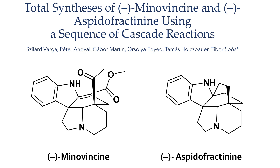Both of these compounds belong to the Aspidosperma family of alkaloids, a class of compounds featuring polycyclic, cage-like structures. The Aspidosperma family have been the target of many total syntheses due to these challenging structures, in particular due to the difficulty of constructing the quaternary carbon centres. The syntheses presented in this paper are notable due to their brevity and the simplicity of the reactions used. The authors stated that their intention was to minimise protecting group manipulations and exotic reagents in order to develop streamlined and practical methodologies to construct the polycyclic frameworks.